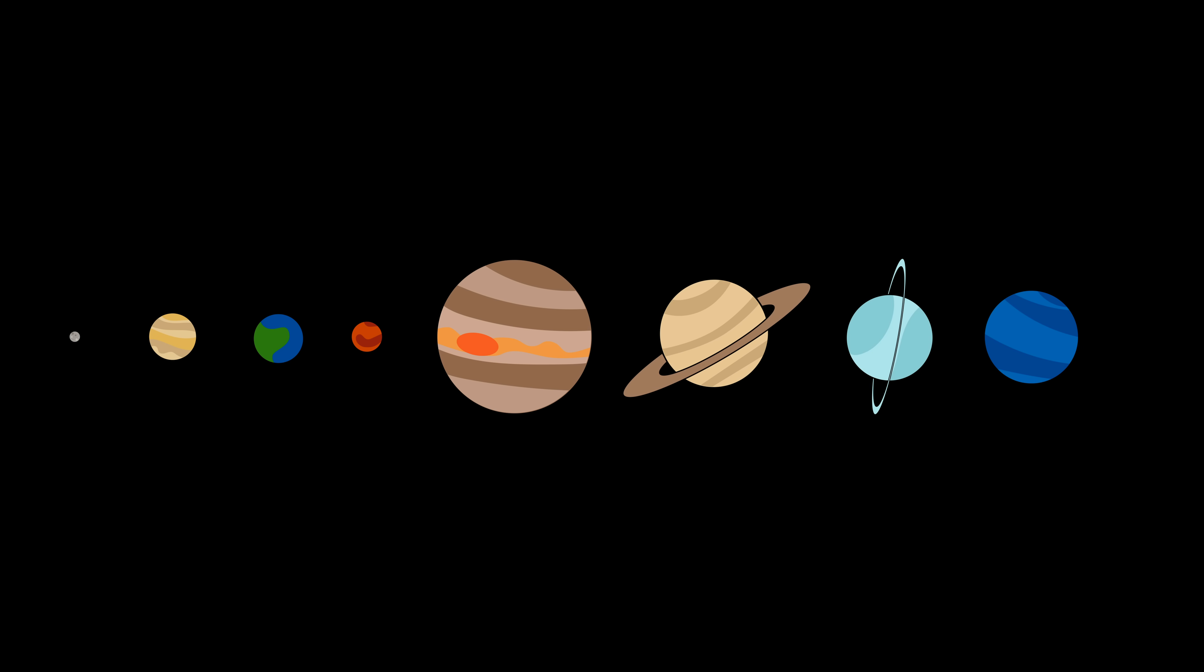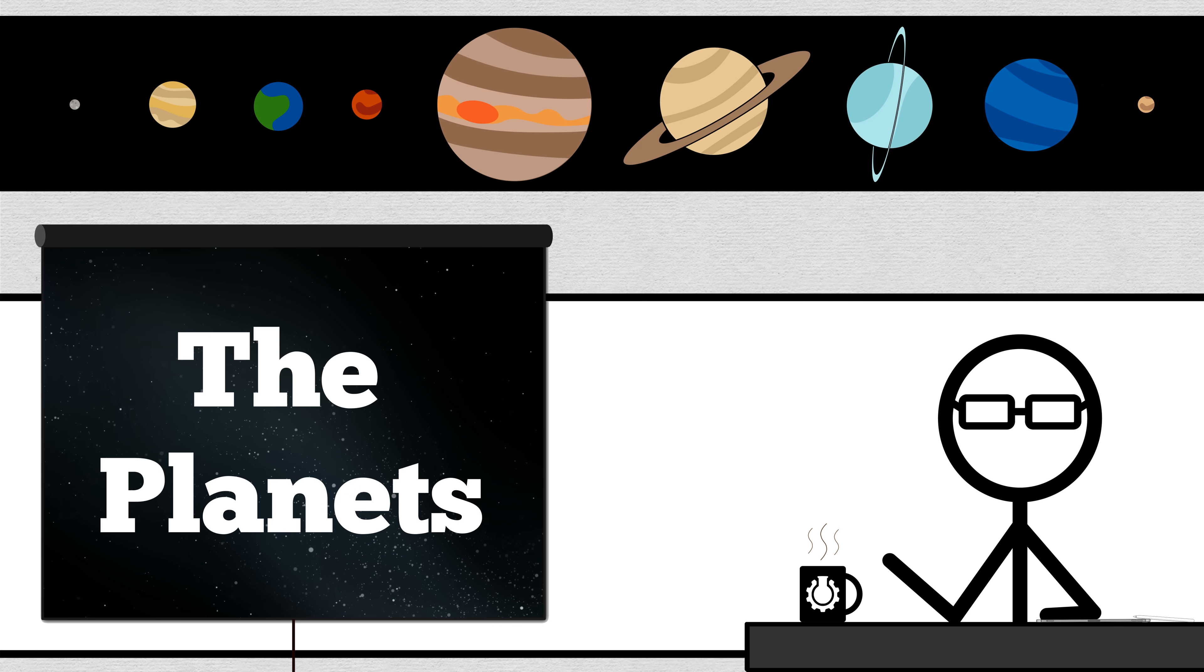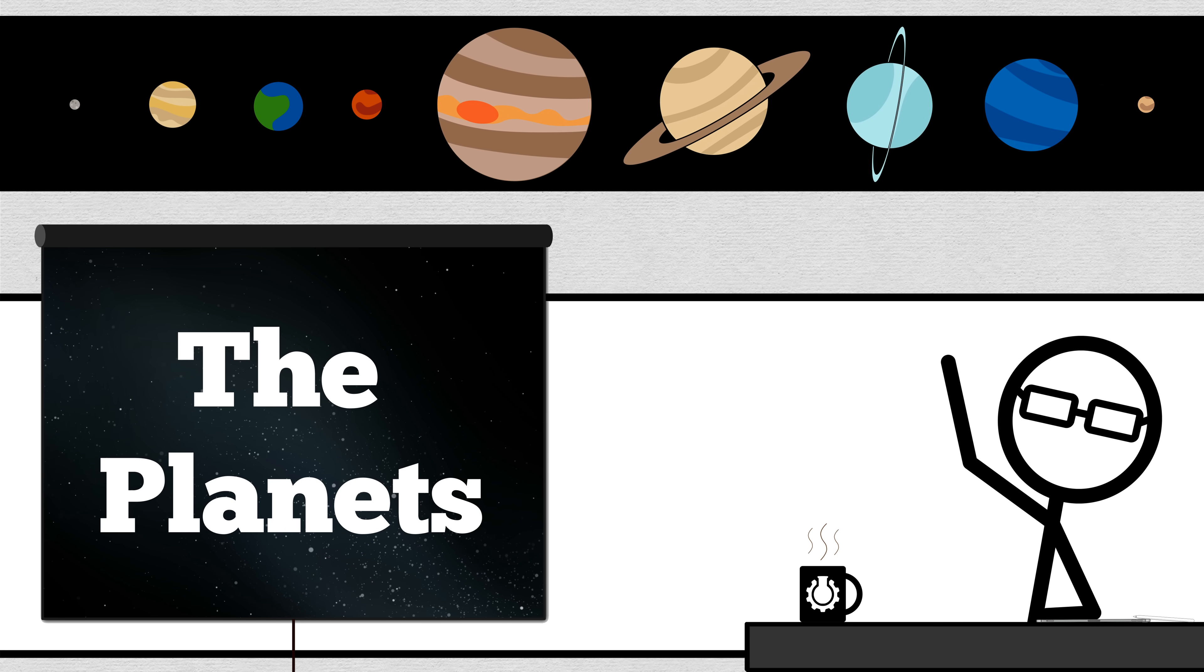My very easy method just speeds up naming planets. Every physics classroom has a solar system line like this, or like this.